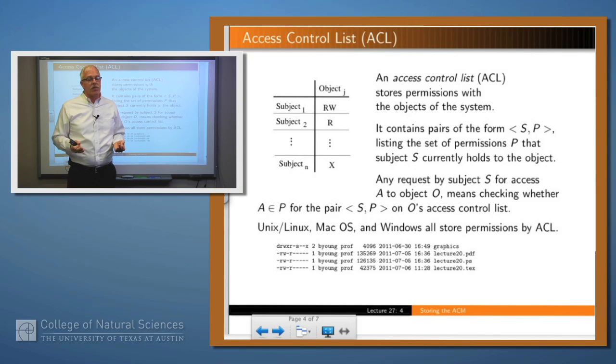So what's an access control list? Think about Unix, for example. In Unix, with each object you say what permissions the owner has, the group has (that is, the people associated with the owner), and everybody else has. That information is stored in the inode for the object. So what an access control list really is, is a representation of a column in the access control matrix.